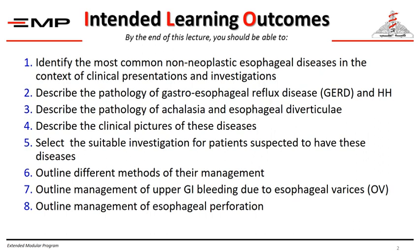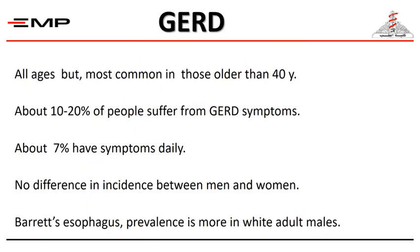You will be able to describe the pathology of gastroesophageal reflux disease and hiatus hernia, describe the pathology of achalasia and esophageal diverticuli, select the suitable investigation for patients suspected to have these diseases, outline the different methods of their management, and outline the management of upper GI bleeding due to esophageal varices and esophageal perforation.